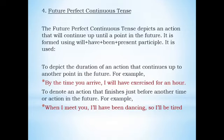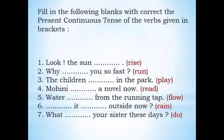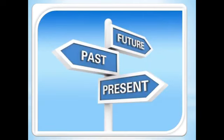Future perfect continuous tense depicts an action that will continue up until a point in the future, formed using 'will have been' plus present participle. For example: 'By the time you arrive, I will have been exercising for an hour'; 'When I meet you, I will have been dancing, so I'll be tired.' Now you have plenty of time to practice the tenses. Please practice, and if you have any doubts, note them down and we can clear them in the next class. I hope tenses are clear. Thank you.